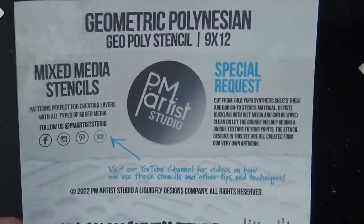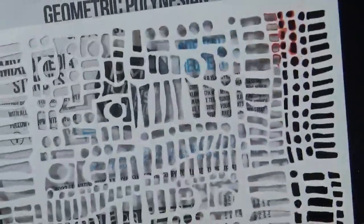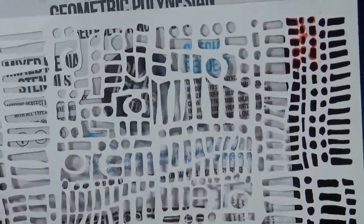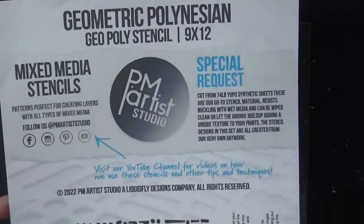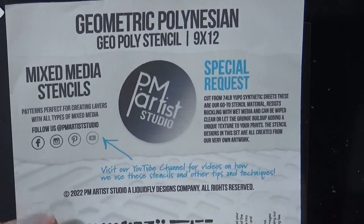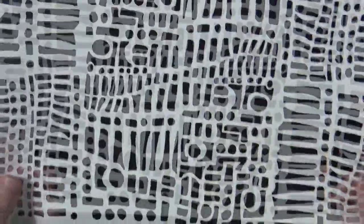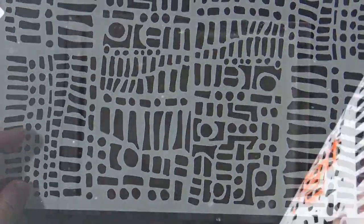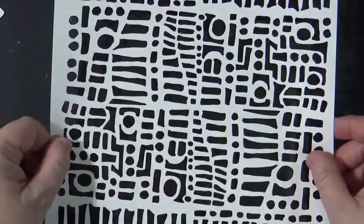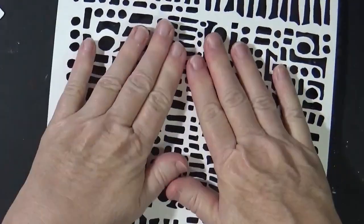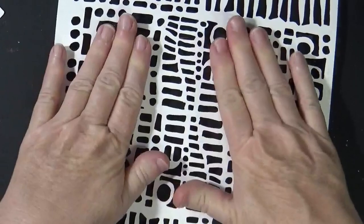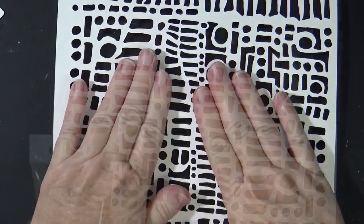This is actually a smaller cut of the bigger Geo Poly, and it's a special request one on their website. You can get it. But it has great pattern in this stencil, and it's going to fit perfectly. Even though this is a 9 by 12, I can still use it on my 5 by 7 inch plate.